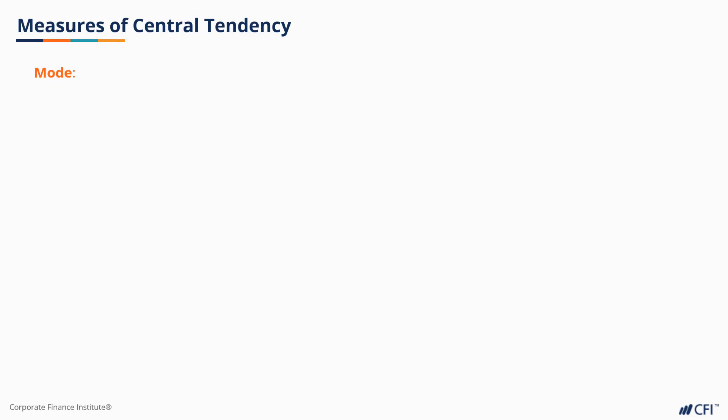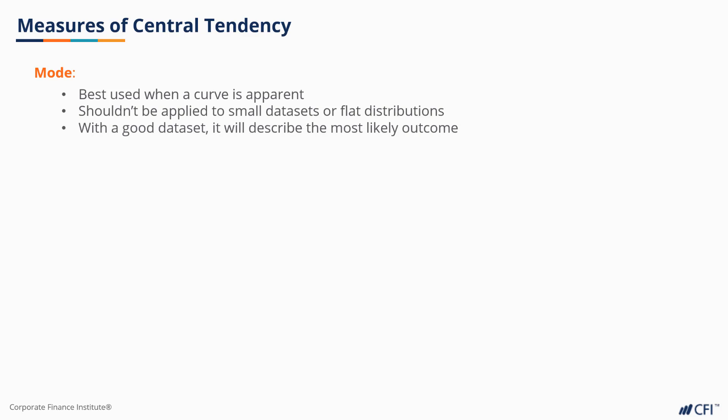Finally, there is the mode. The mode is best applied when our data set is quite large and a curve is apparent. When applied to small data sets or relatively flat curves, it shouldn't be considered as too meaningful. But with a good set of data, the mode describes the most likely outcome. It's the outcome that occurs the most frequently.